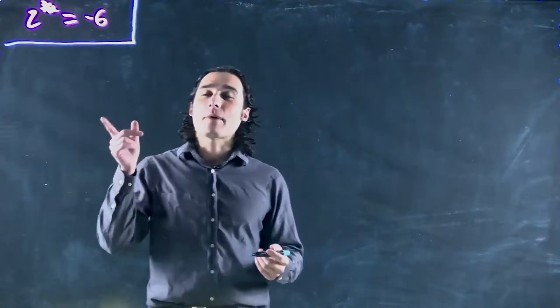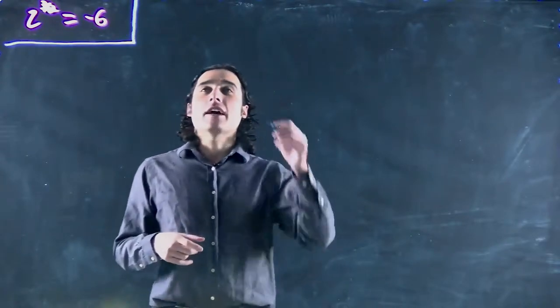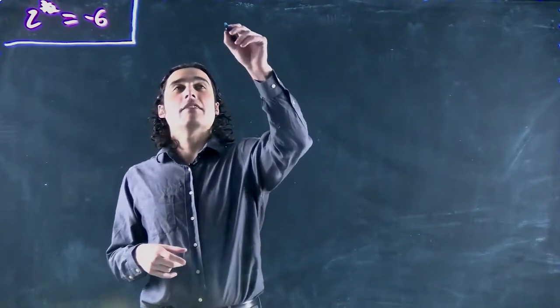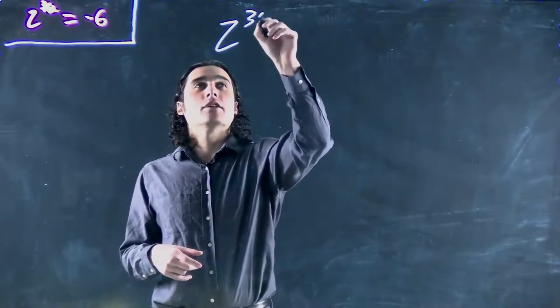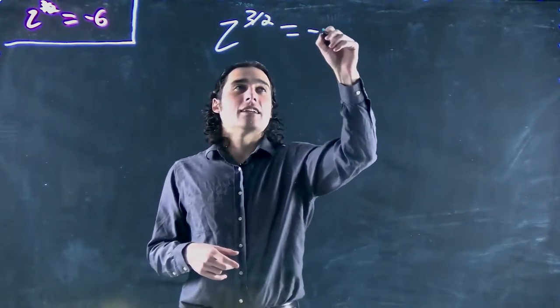Hi, we're still looking at power functions and we're going to look at an unusual one. What we have is z to the power of 3 over 2 and that's equal to negative 6.